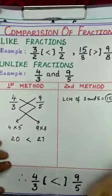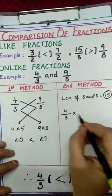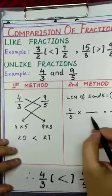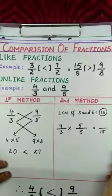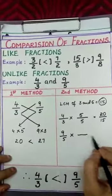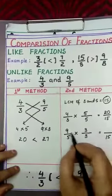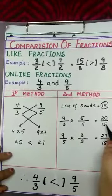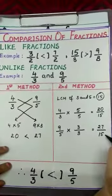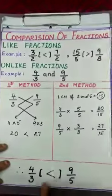We convert the two unlike fractions into like fractions with LCM 15 as the denominator. For 4/3: to get 15 in the denominator, multiply 3 by 5, and with the same 5 multiply the numerator: 4 × 5 = 20, giving 20/15. For 9/5: 5 × 3 = 15, and 9 × 3 = 27, giving 27/15. Now 20/15 equals 4/3 and 27/15 equals 9/5. Both are like fractions. Comparing numerators: 20 is less than 27, so 4/3 is less than 9/5.